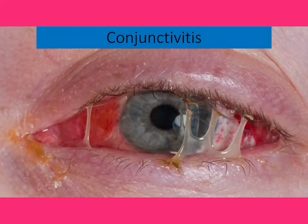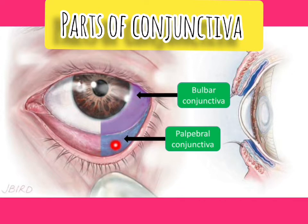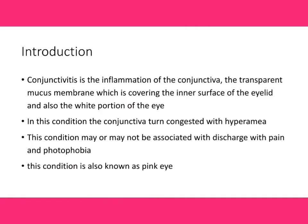Hello friends, welcome to my new video. Today I am going to discuss conjunctivitis, a common eye disease we mostly see in daily OPD. Here I show the parts of conjunctivitis — the bulbar conjunctiva, the palpebral conjunctiva, and the fornix area. The bulbar conjunctiva covers the sclera, and the palpebral conjunctiva covers the inner surface of the eyelid. Conjunctivitis is the inflammation of the conjunctiva, a transparent mucous membrane covering the inner surface of the eyelid and the white portion of the eye (sclera). During conjunctivitis, the conjunctiva becomes congested and hyperemic, and it may or may not be associated with discharge, pain, and photophobia. This condition is also known as pink eye.